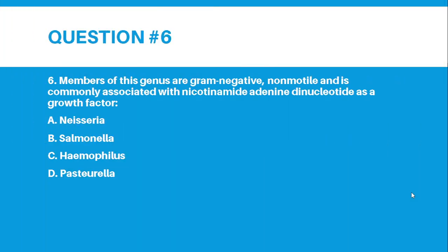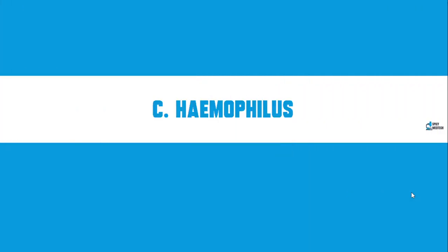Number 6. Members of this genus are gram-negative, non-motile, and are commonly associated with nicotinamide adenine dinucleotide as a growth factor. Letter A, Neisseria. Letter B, Salmonella. Letter C, Haemophilus. Letter D, Pasteurella. And the correct answer for number 6 is letter C, Haemophilus.